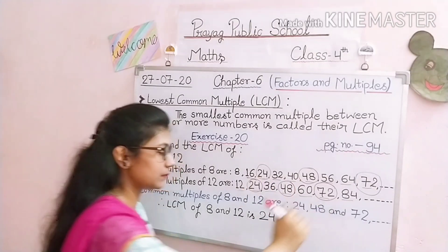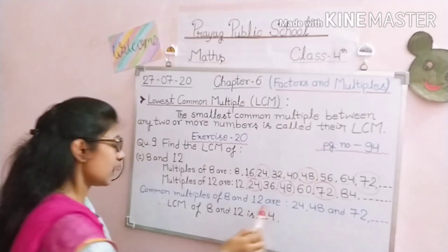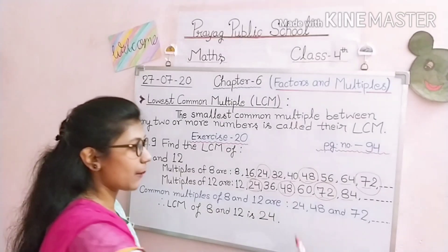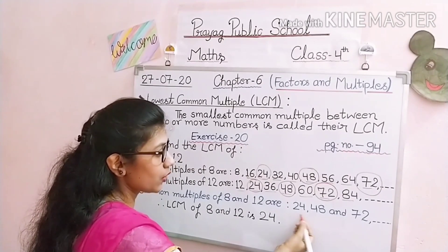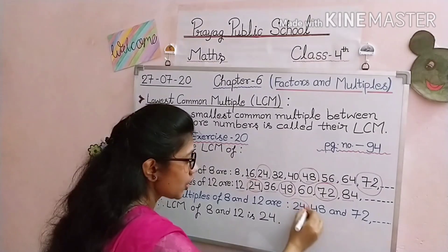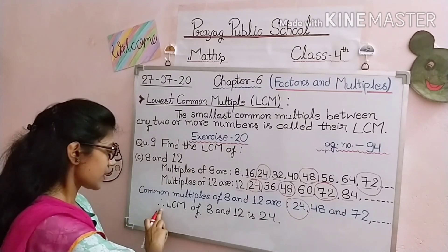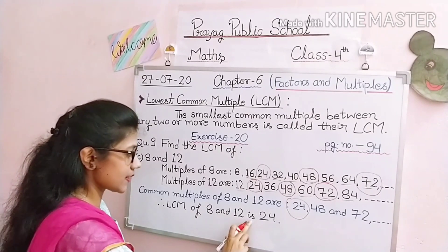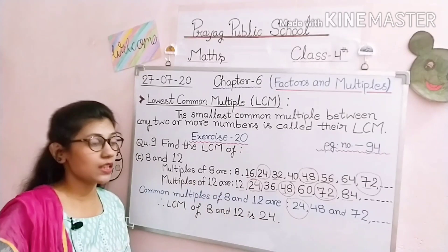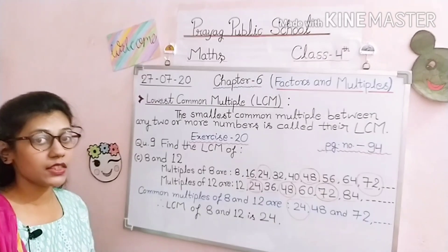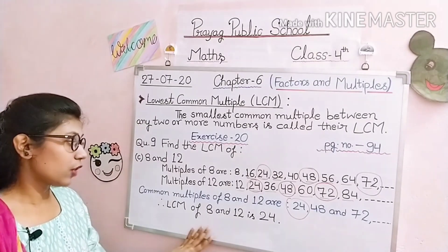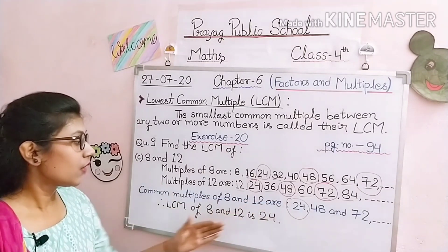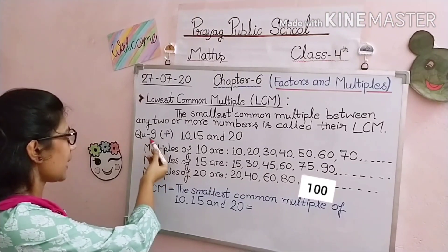Now that we have listed the common multiples — 24, 48, and 72 — we can identify the smallest one. The smallest number among 24, 48, and 72 is 24. Therefore, the LCM of 8 and 12 is 24. The lowest or least common multiple has been found. This is the method: find multiples, identify common multiples, and then select the smallest one as the LCM.